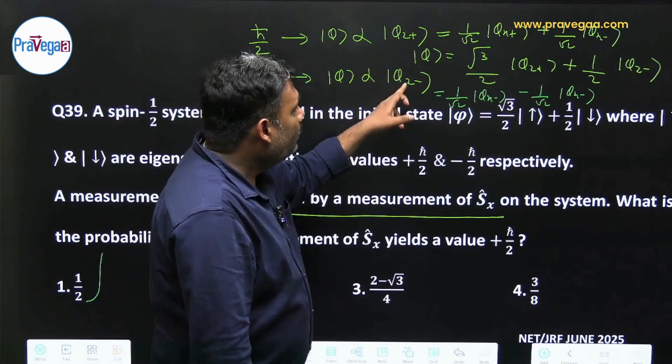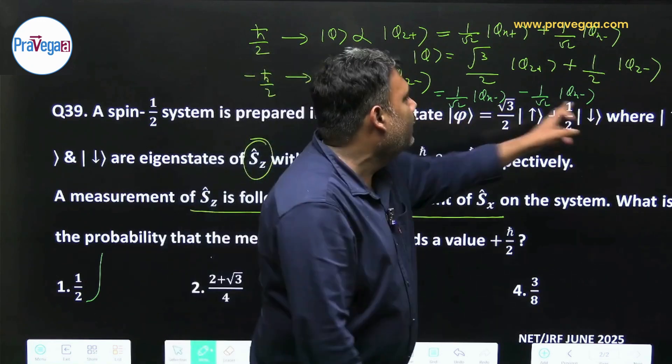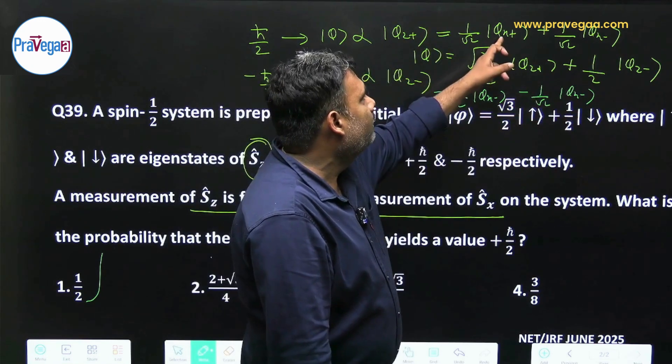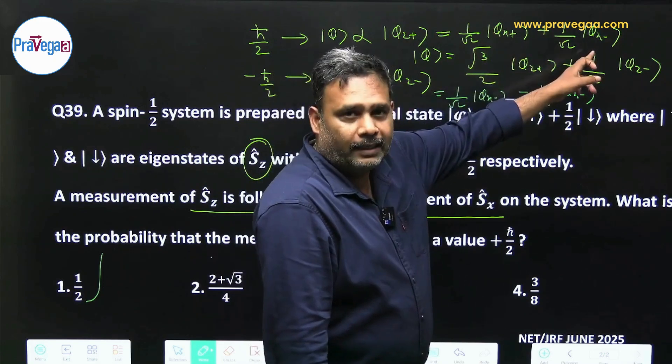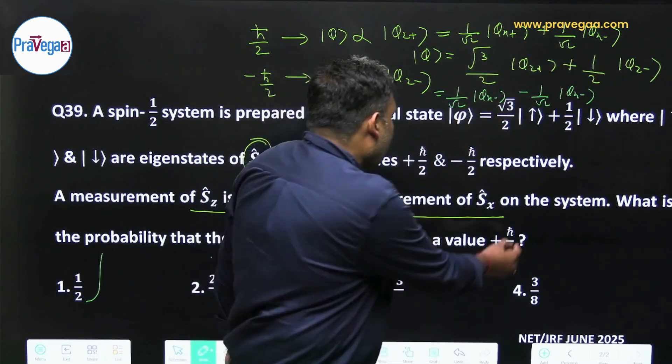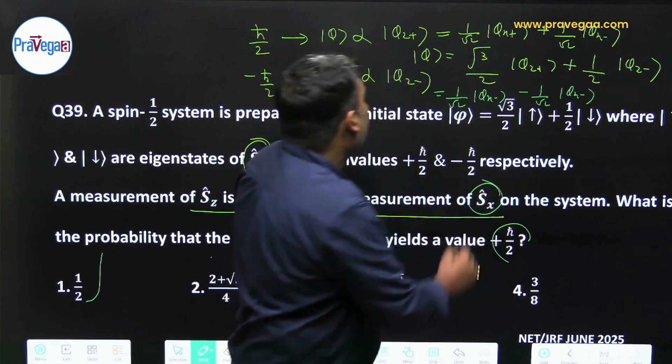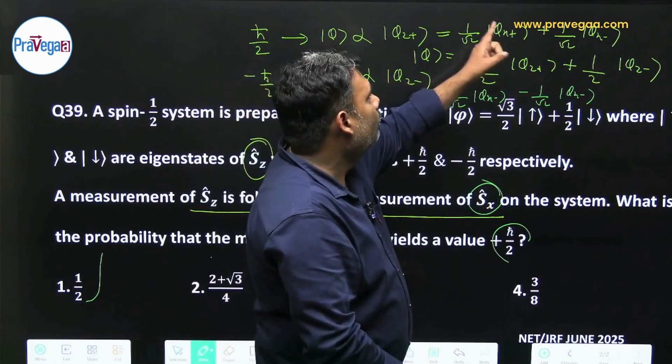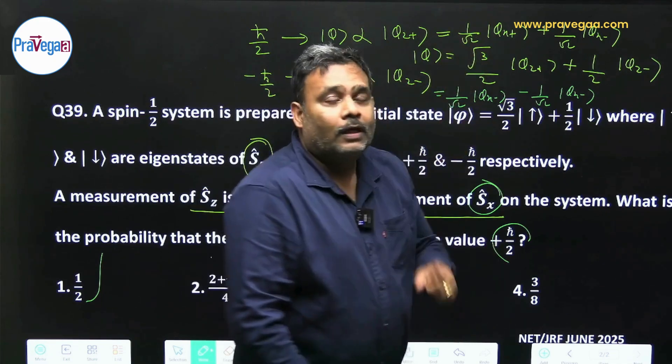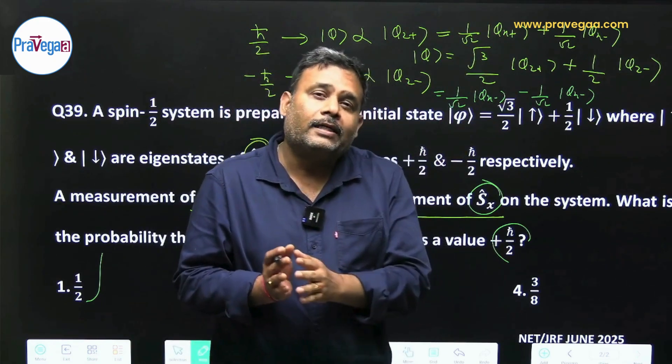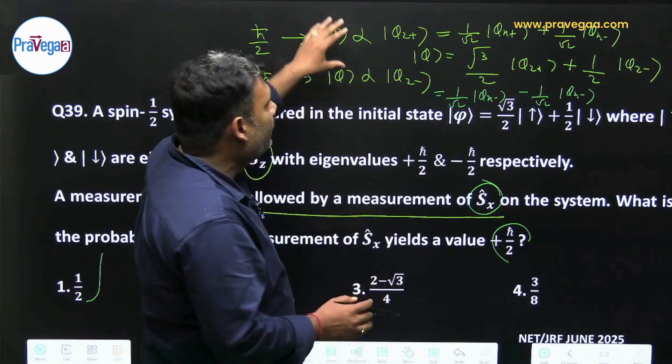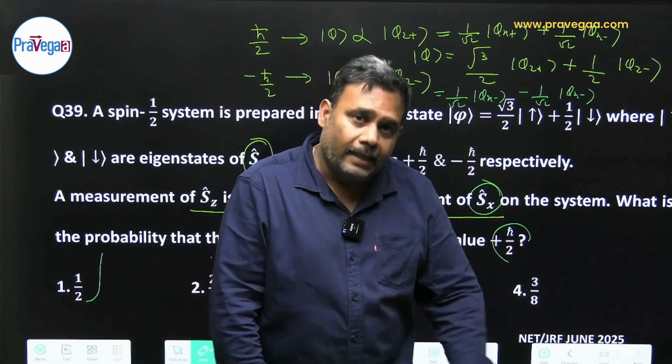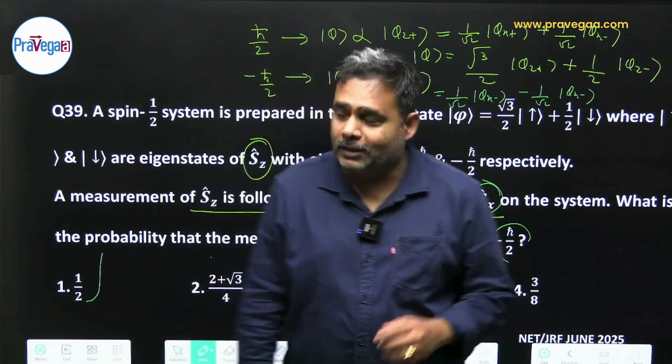Now this φz+ and φz- can be written in a basis of φx+ and φx-. So again the probability of measurement of Sx on either φz+ or φz- is equal to half. Because now your state is not remain φ state, rather it may either be φz+ or φz-. So this is a very conceptual question.